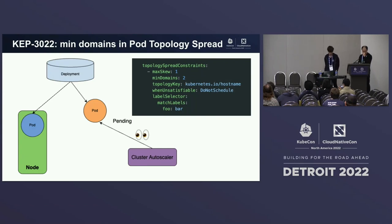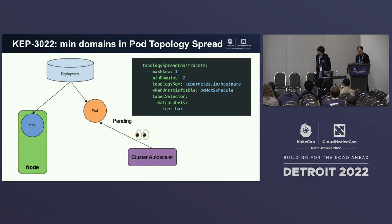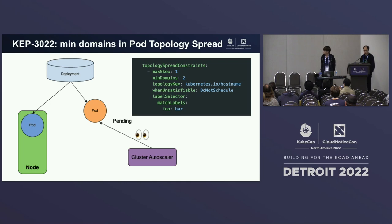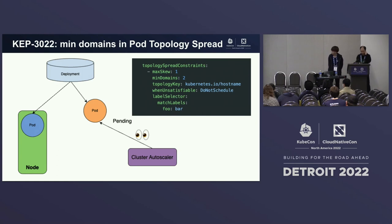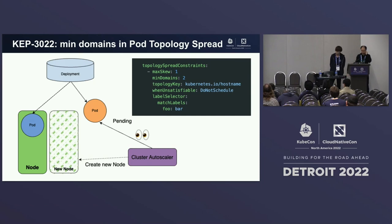Here's an example: a deployment with two replicas using topology spread constraint with maxSkew 1, minDomains 2, topology key hostname, and DoNotSchedule. One replica is on a node, but the second is pending because the number of domains is currently 1 and should be 2. The cluster autoscaler notices the pending pod and creates another node so the pod can be scheduled.